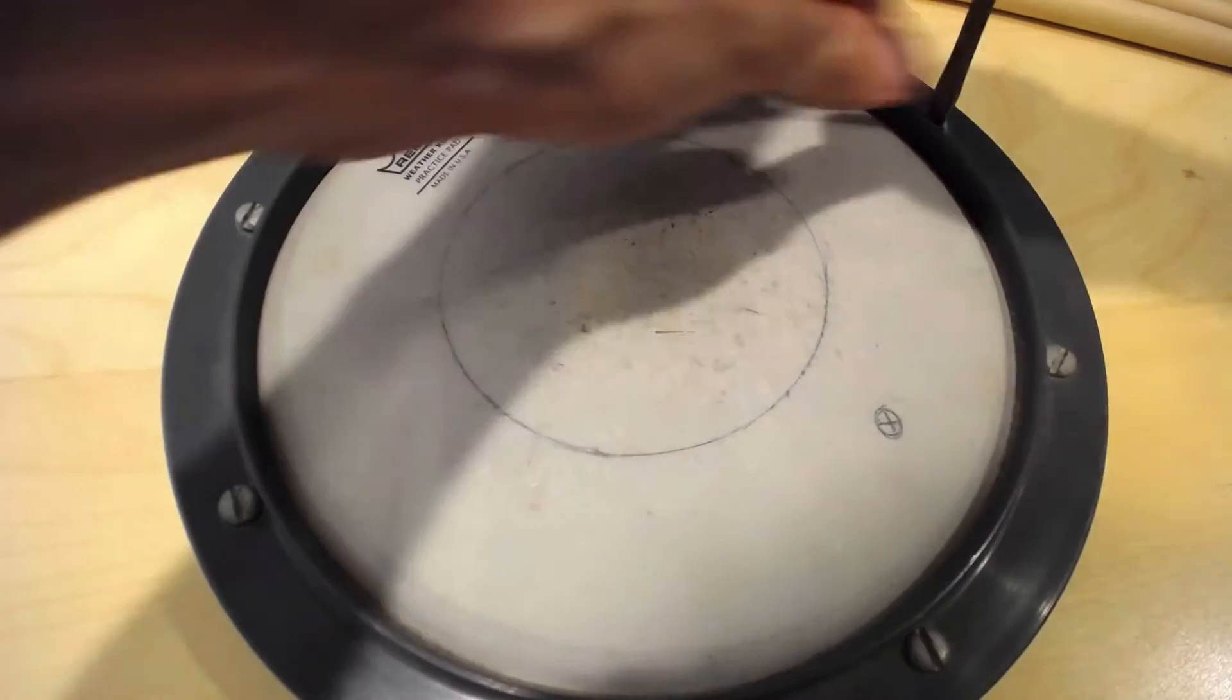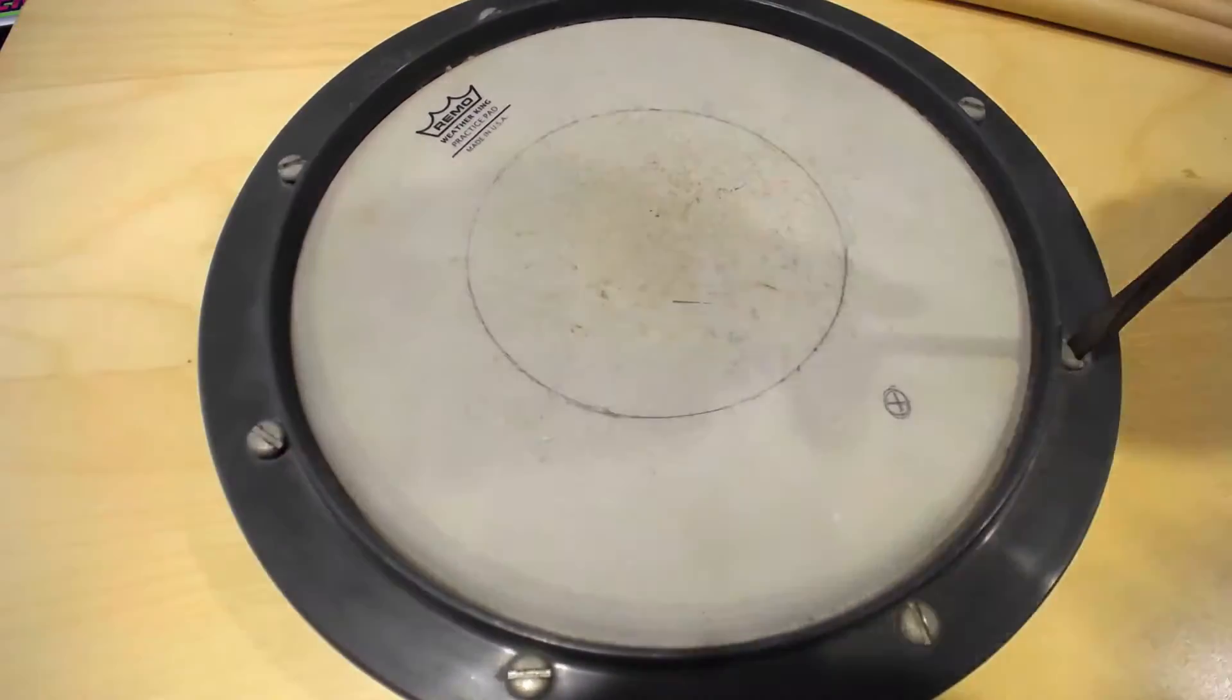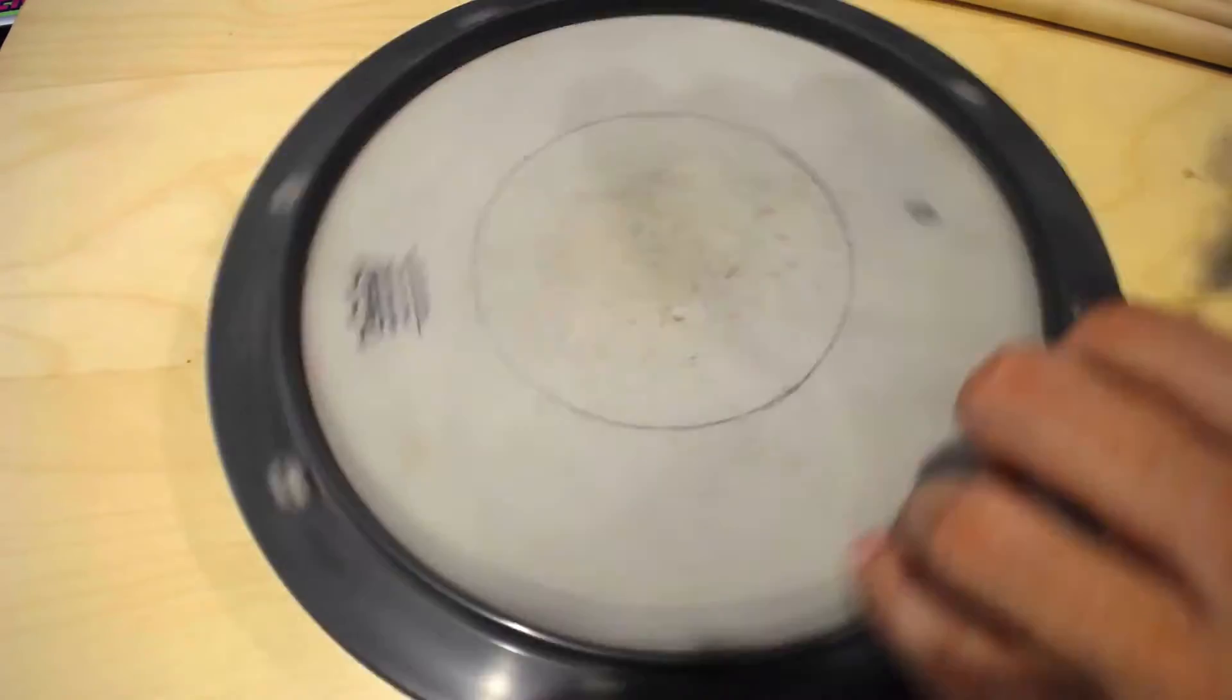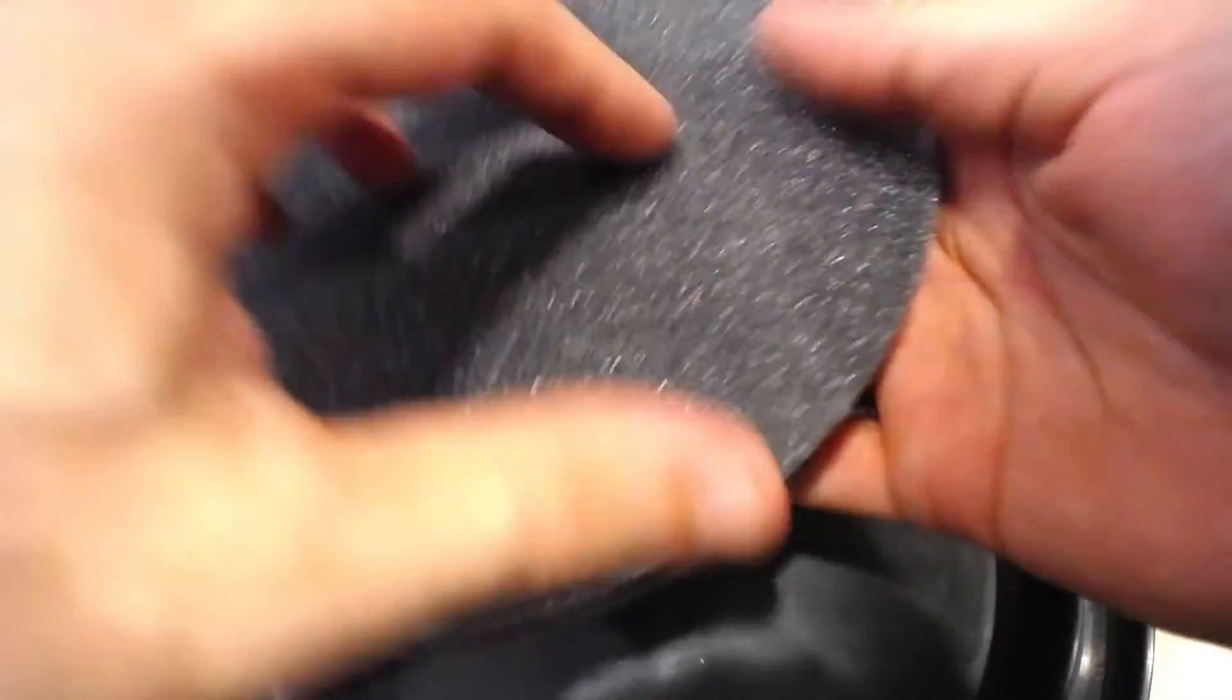Anyone who has taken drum lessons probably recognizes these Remo practice pads. Taking the pad apart, it's not a complicated thing—just a rim, a head, and a piece of foam.